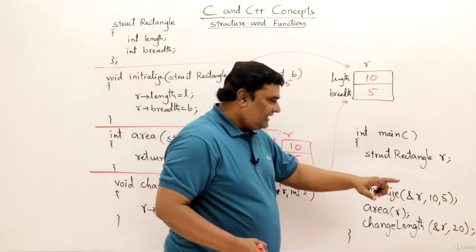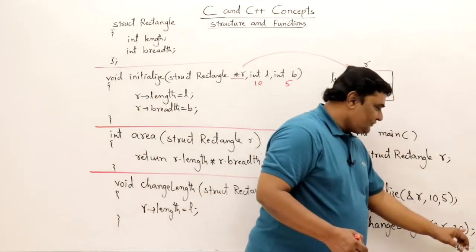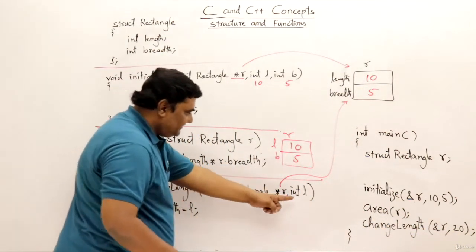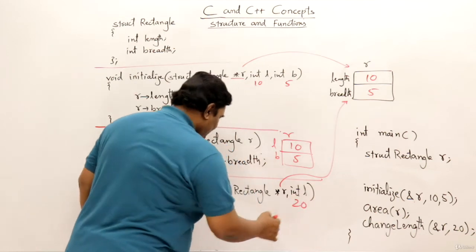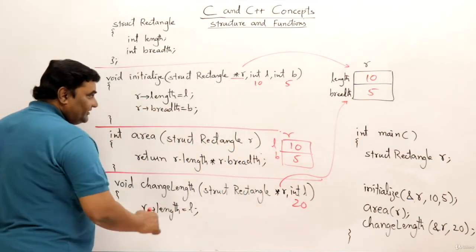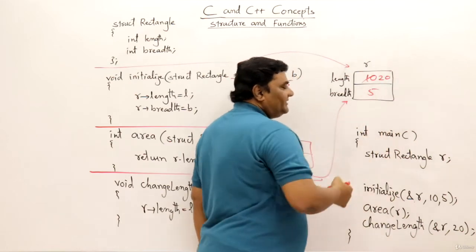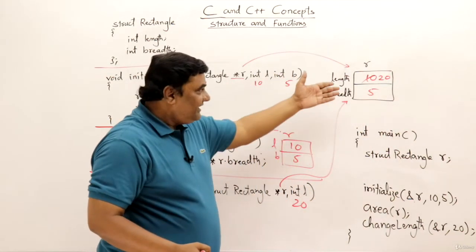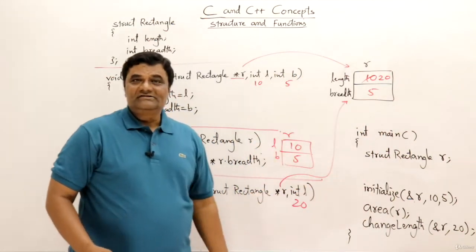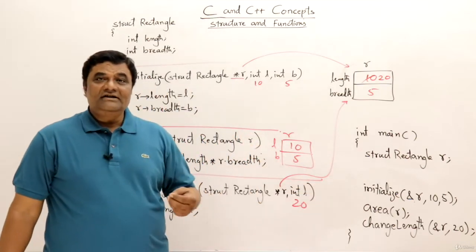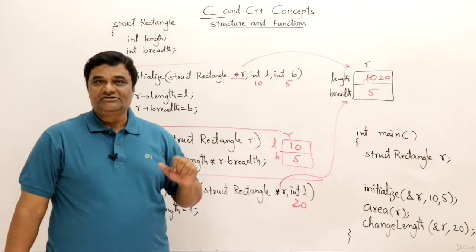Then third, change length. I want to change the length of this rectangle to 20. So send the address then also a new length that is 20. Then r arrow length assigned 20, so this will change to 20. This will become 20 and actual value is changed, actual parameter is changed. So that's all. I have just demonstrated how we can write down functions upon a structure.